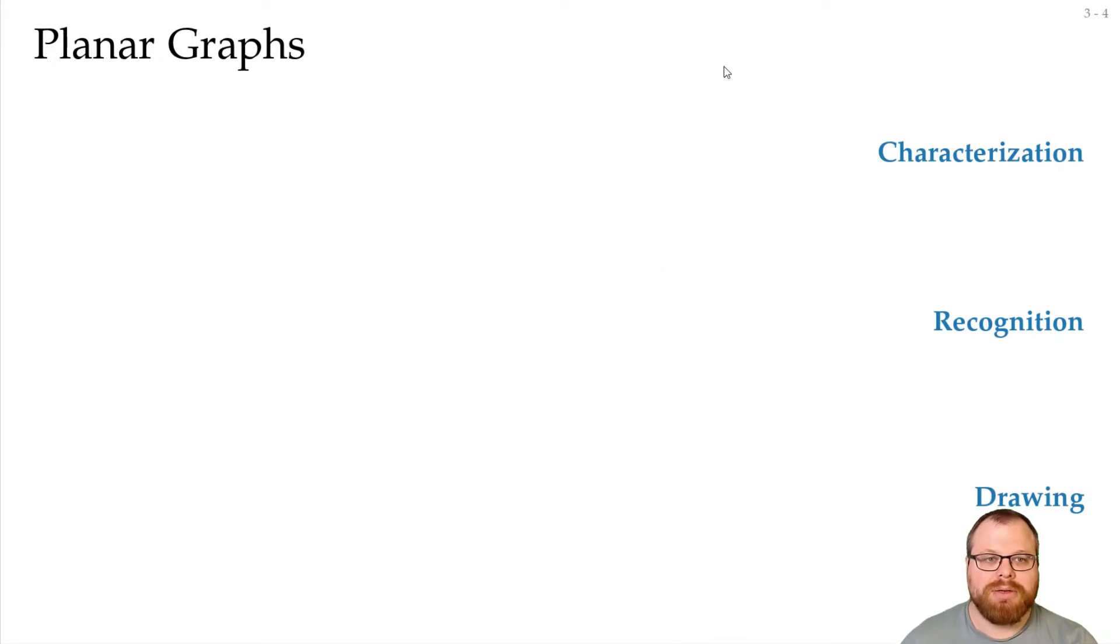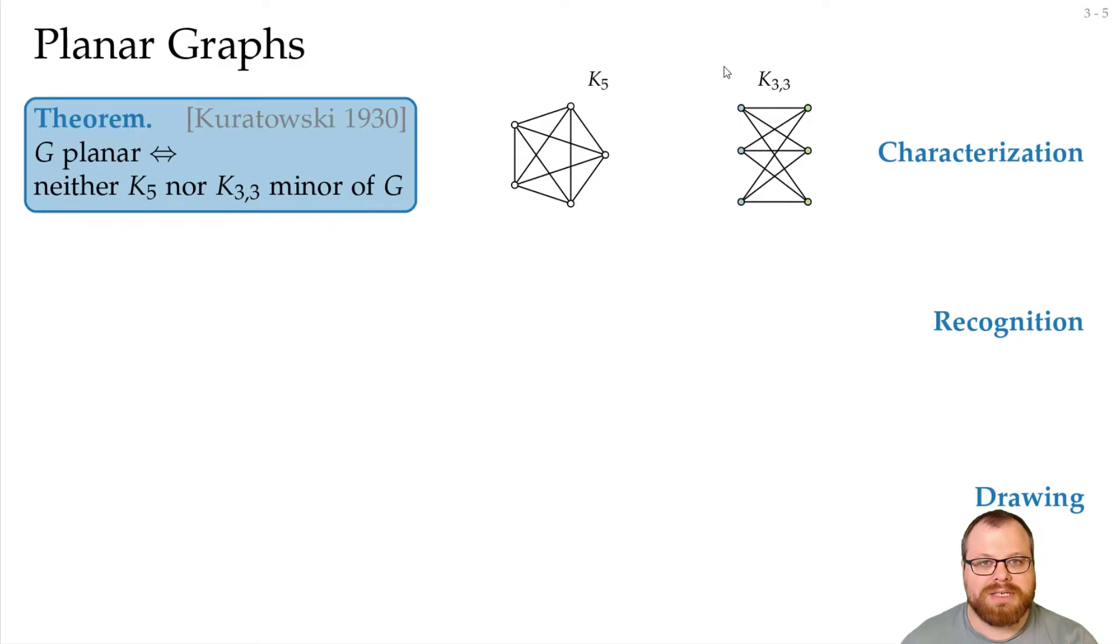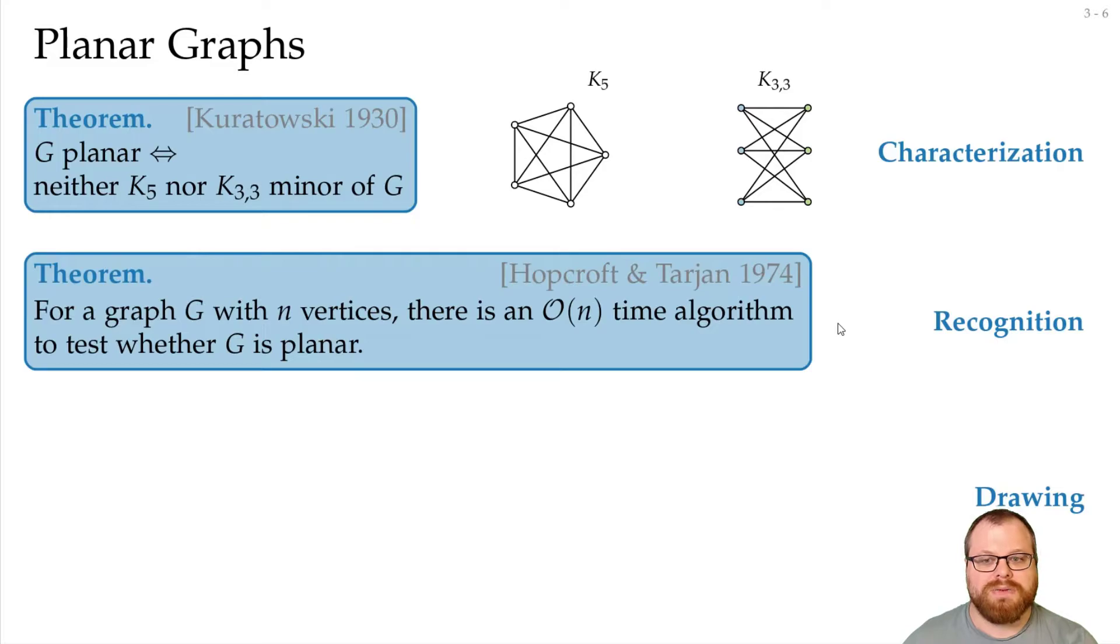For the characterization, we already learned in the first lecture that there is Kuratowski's theorem. So a graph is planar if and only if neither the K5 nor the K3,3 are a minor of the graph. That also immediately gave us a recognition algorithm, although it was not very fast. I also want to mention here the fast algorithm by Hopcroft and Tarjan from 1974, that can recognize a planar graph in linear time. This algorithm also computes a planar embedding for you.